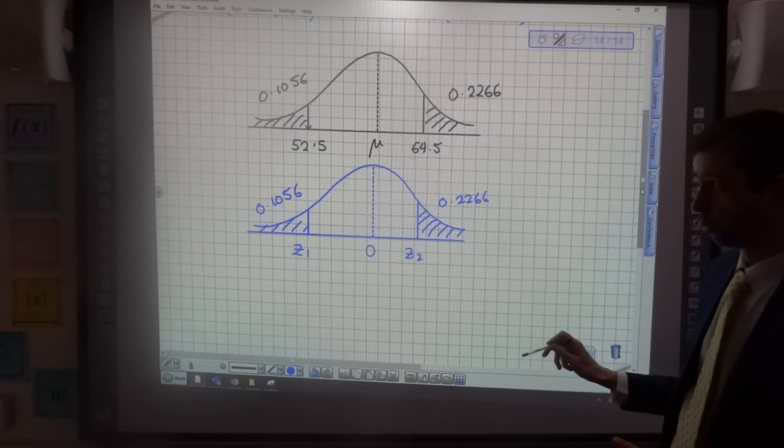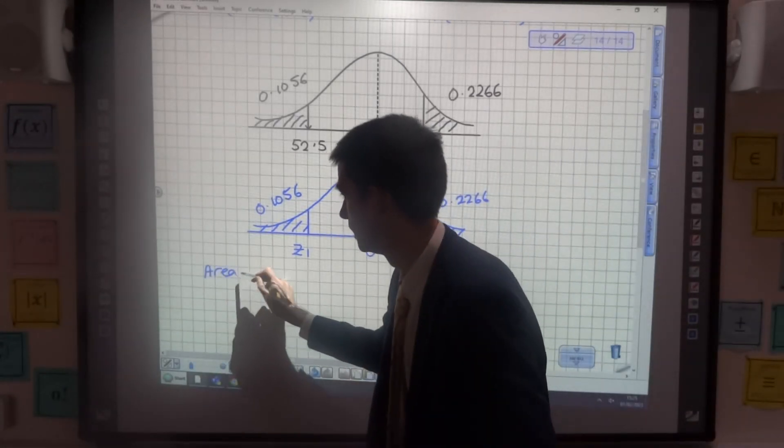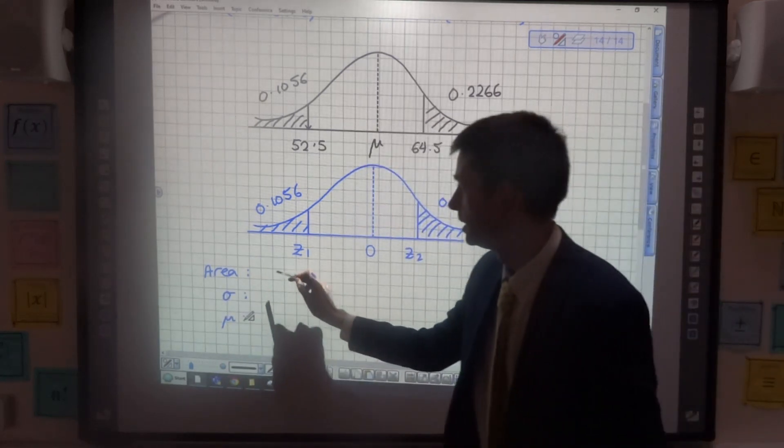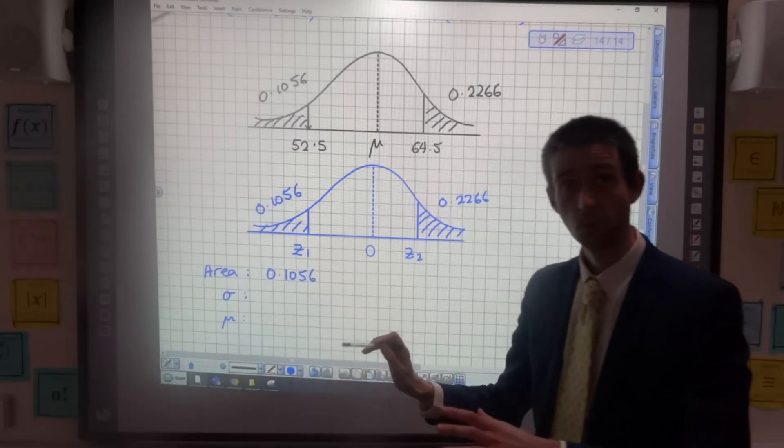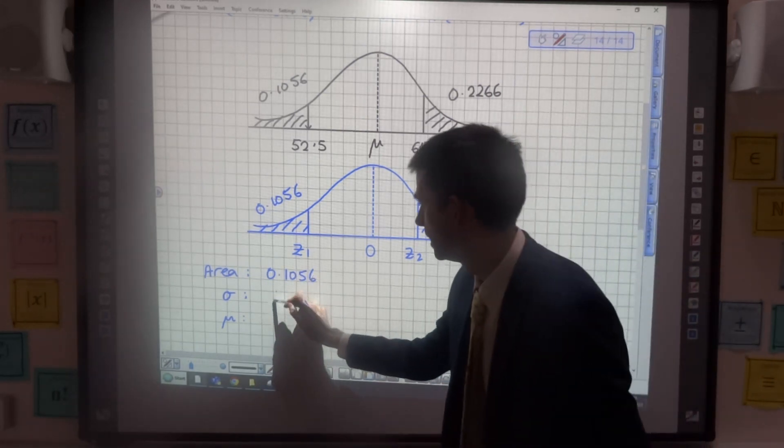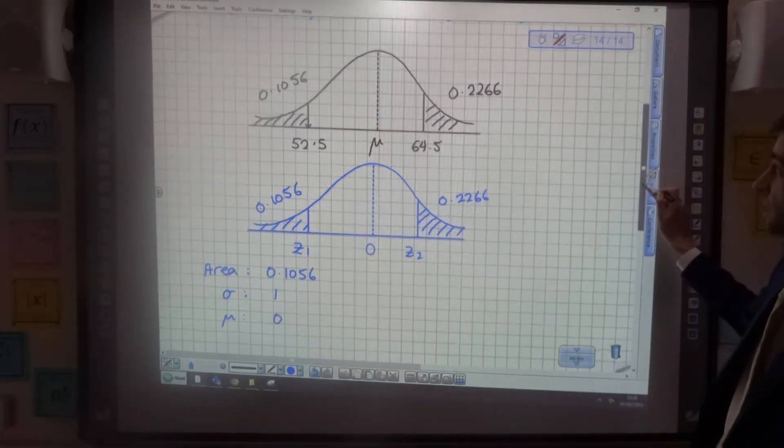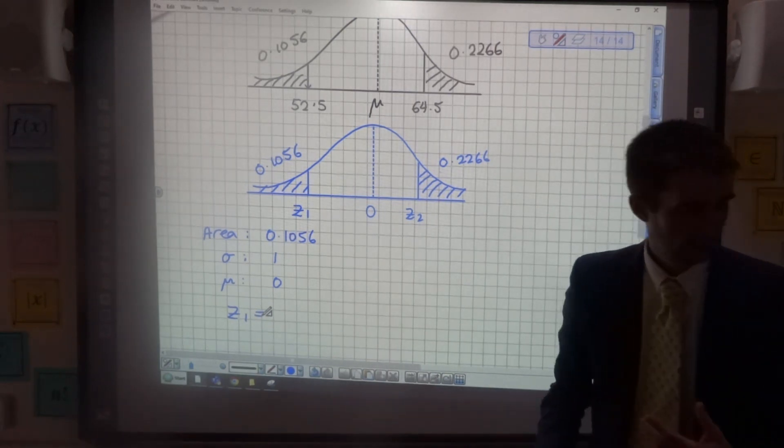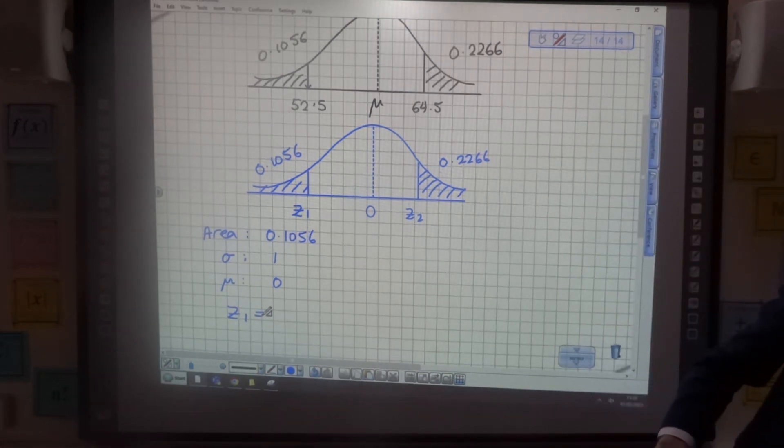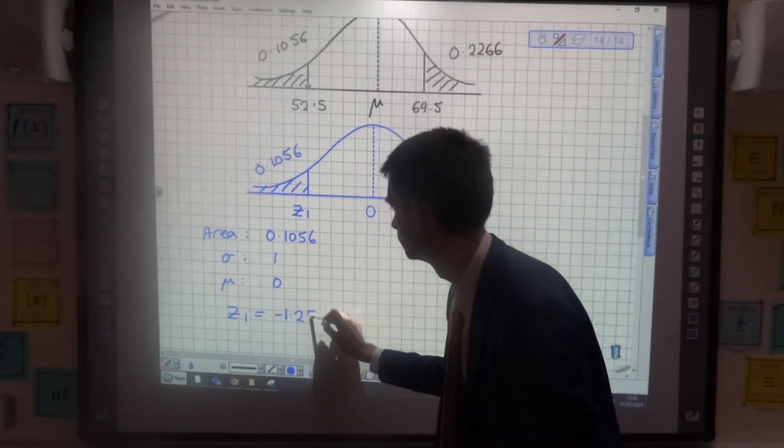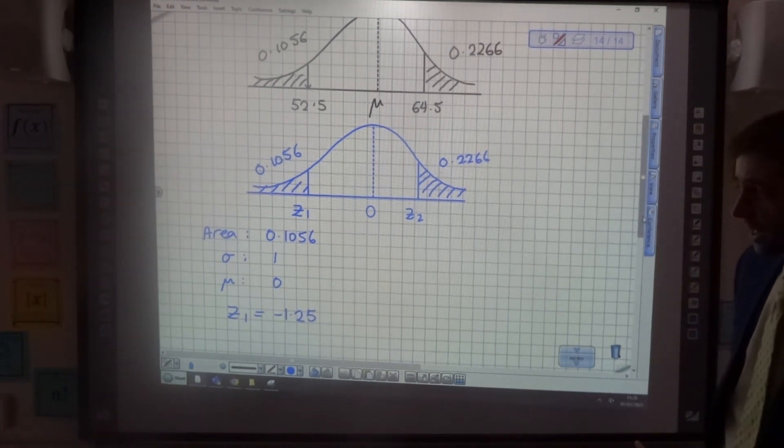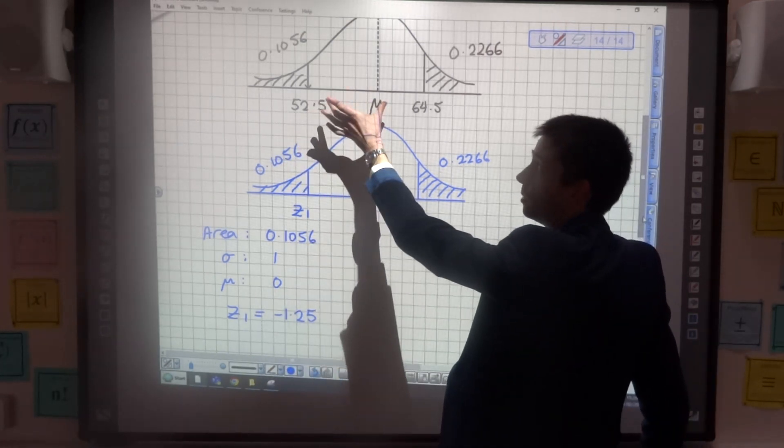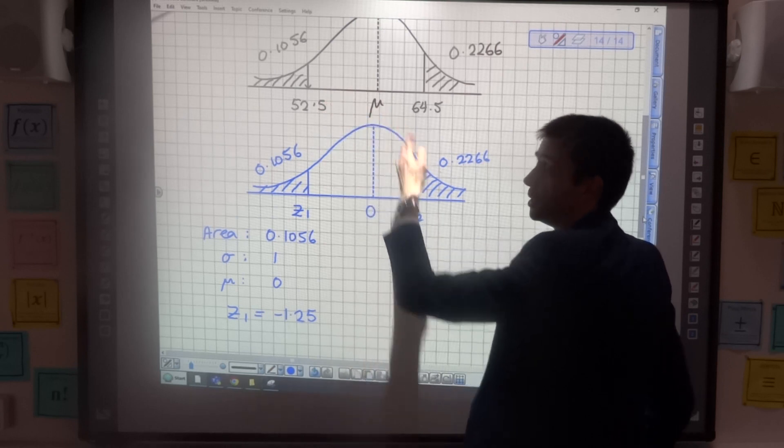So, now I'm going to go into the inverse normal function on my calculator to find z1. I need to tell it the area, the standard deviation, and the mean. The area is 0.1056. Remember, it always wants the area to the left. Standard deviation 1, mean 0. And that then gives me, using my inverse normal function on my calculator, that's menu 7, option 3, z1 score of minus 1.25. So what that means is, 52.5 is 1.25 standard deviations below the mean, mu, which we'll find soon.